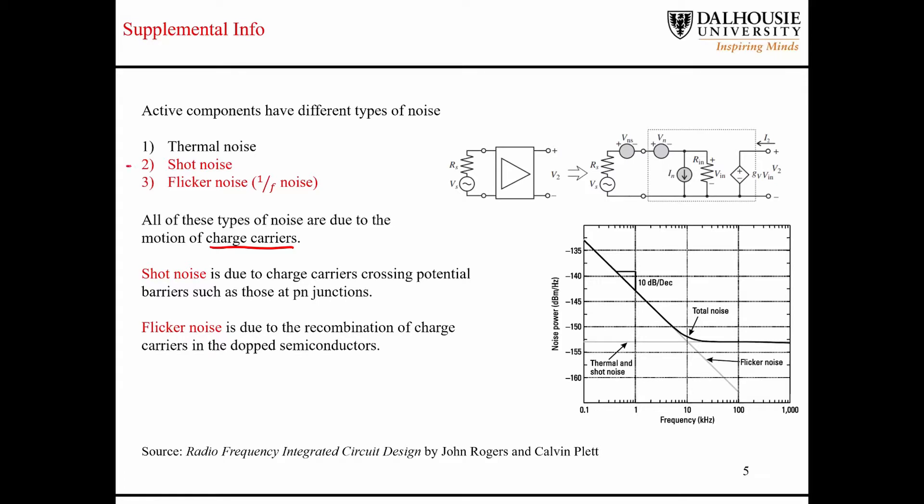So the first two types of noises that I'm mentioning here are shot noise and flicker noise. The definitions of shot noise and flicker noise here are a bit technical, and I'm not going to get into any details. Shot noise is due to charge carriers crossing potential barriers, such as those at PN junctions. Let's just say that we had a PN junction that looks something like this.